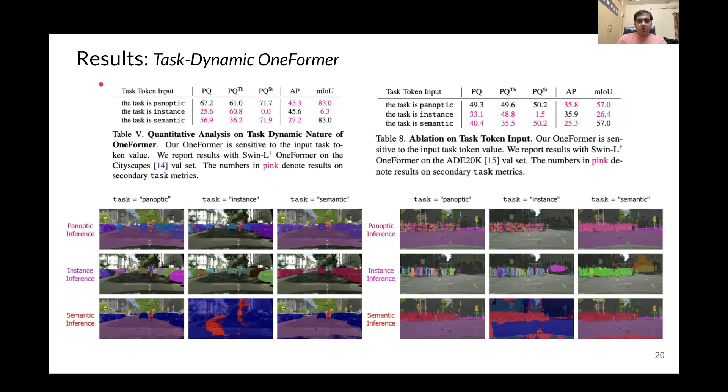We can also infer that from the quantitative results here, where when we set the task as instance, the value of PQ_st, which is the stuff part of panoptic quality, is 0, which means when the input is the task as instance, our model only focuses on the foreground regions and does not really care about the background regions.